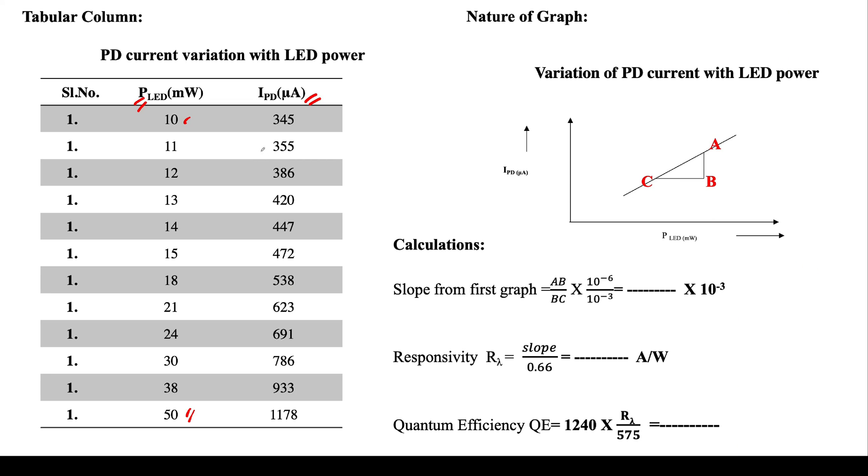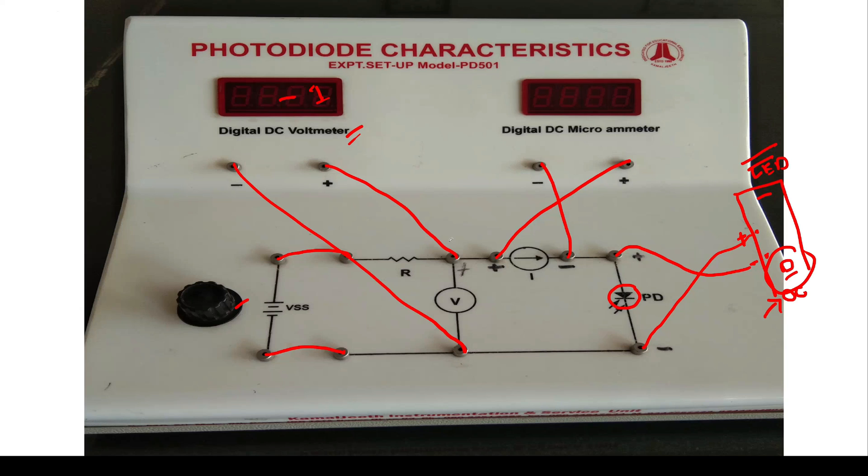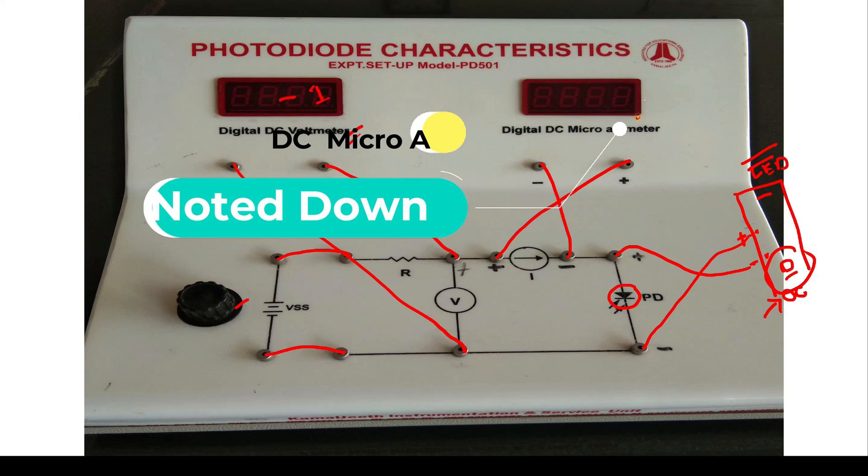By using this knob, you need to change the LED intensity so that if you go on increasing the intensity of the LED, depending upon that, the current will increase in this manner, and that current will be noted down from this side.